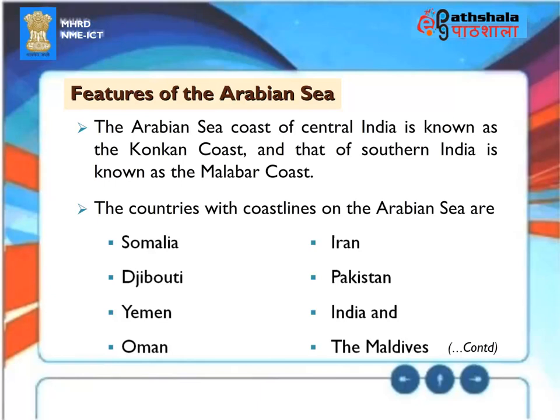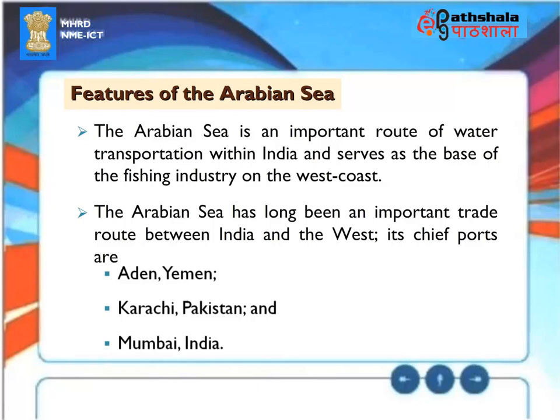Features of the Arabian Sea. The Arabian Sea coast of central India is known as the Konkan coast, and that of southern India as the Malabar coast. Countries with coastlines on the Arabian Sea include Somalia, Djibouti, Yemen, Oman, Iran, Pakistan, India and the Maldives. The Arabian Sea is an important route for water transportation and serves as the base of the fishing industry on India's west coast. It is also a long-standing trade route between India and the west. Chief ports include Aden (Yemen), Karachi (Pakistan) and Mumbai (India).